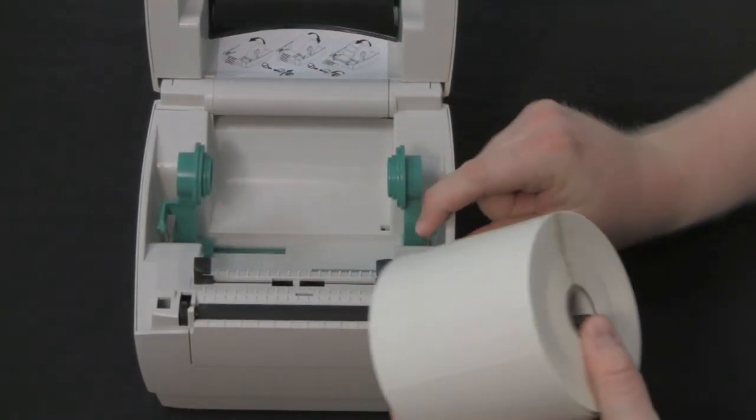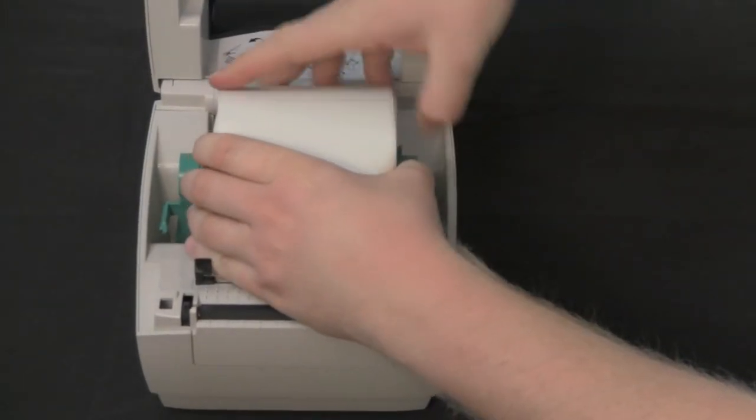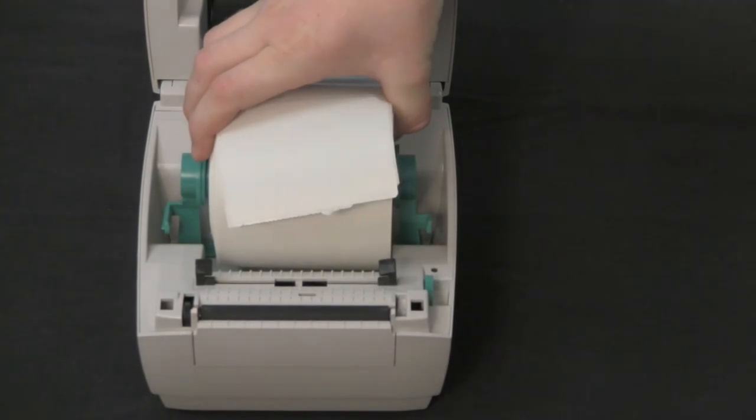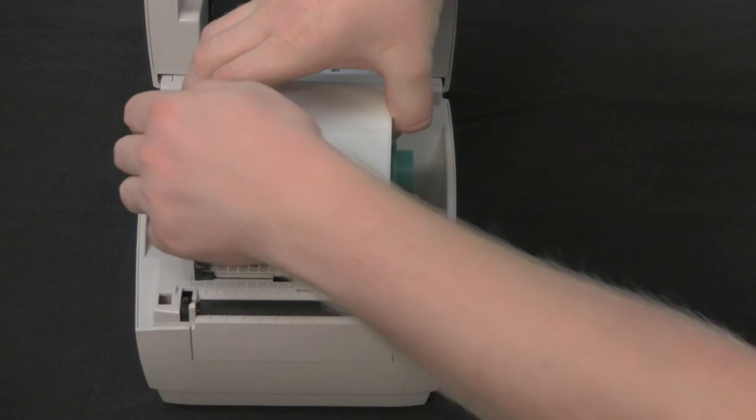Hold the media holders open wide enough to insert the roll. Insert the roll so the labels are facing up as it leaves the printer. Allow the media holders to retract into the core of the roll.